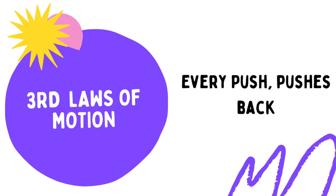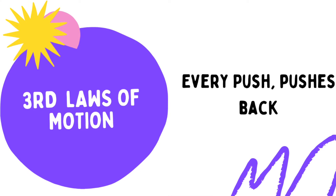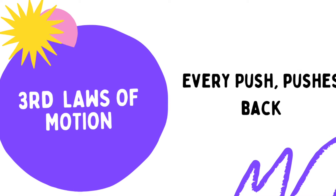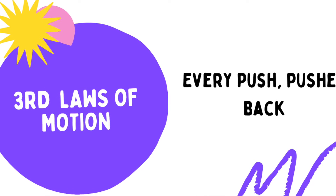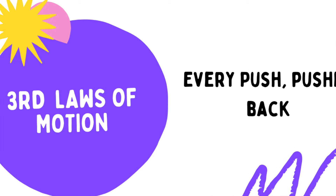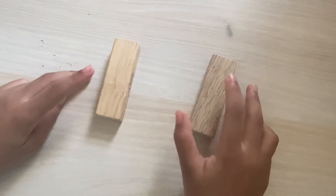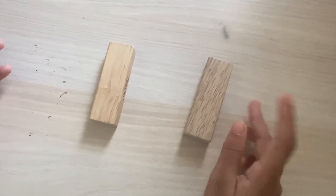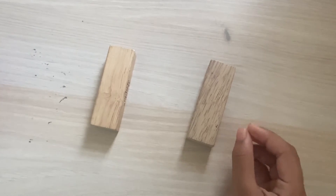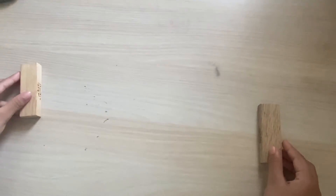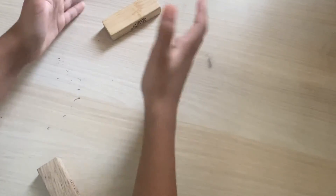Now, the third law of motion. Every push pushes back — this is also called every action has an equal and opposite reaction. These are two objects. I'm going to collide them with each other. See, if they collide — I have put them together and they bounce backwards. So, this is the third law of motion.